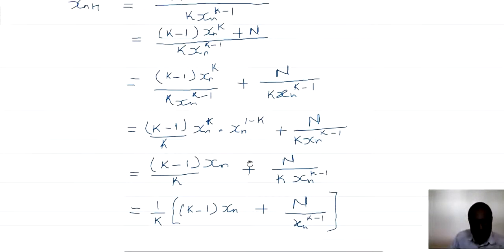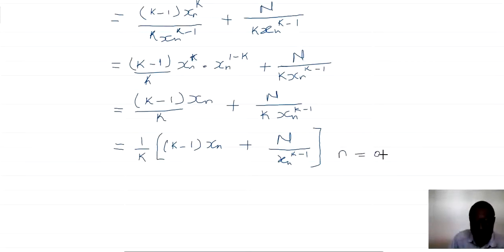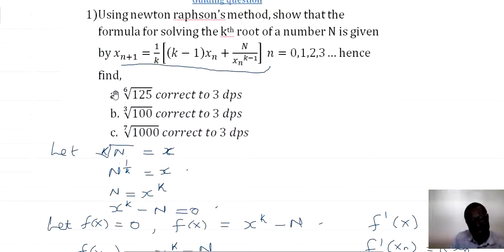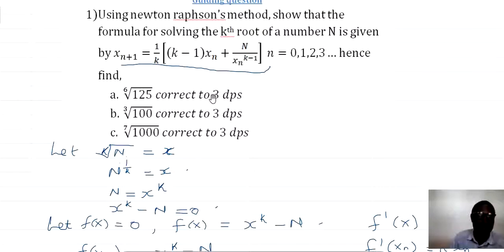So let's check the equation given to us. Yes, we have now got this for values of n equal to 0, 1, 2, 3, and they continue. So this is our better approximation formula for finding the kth root of a number n. So let's try it out. We are now going to use this formula to find the 6th root of 125. Comparing, our k is 6 and our N is 125. We also need the initial approximation and the maximum possible error, based on the requirement of 3 decimal places.